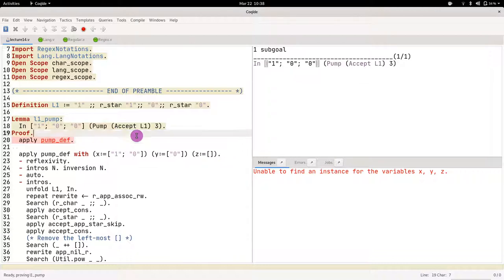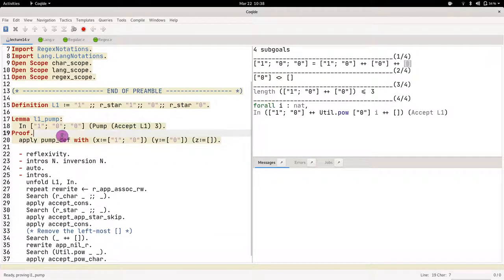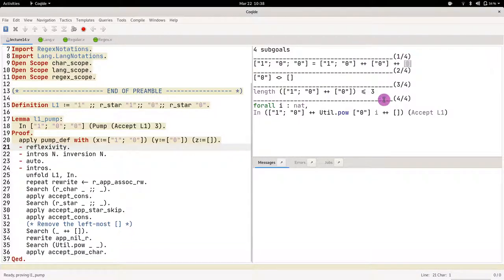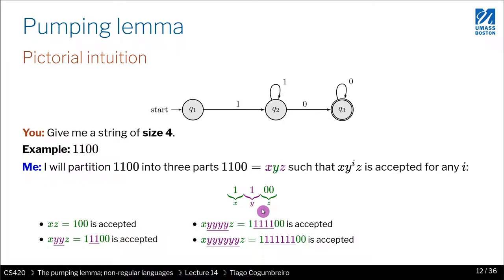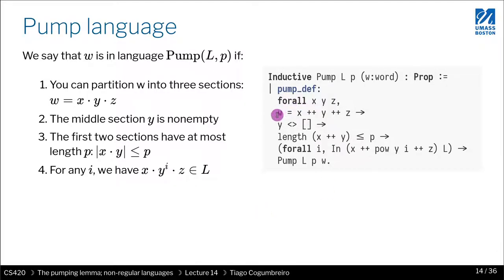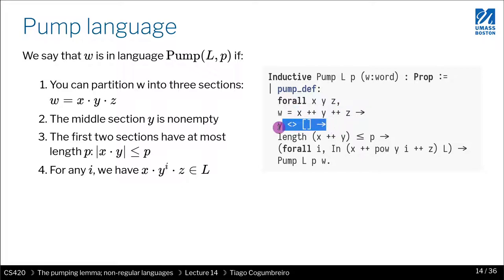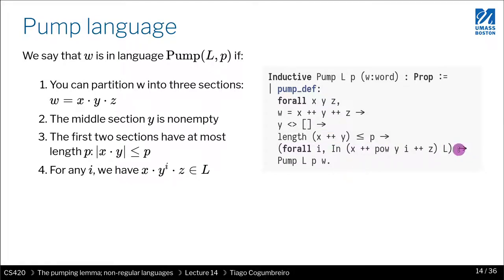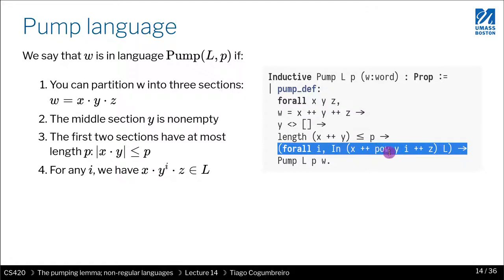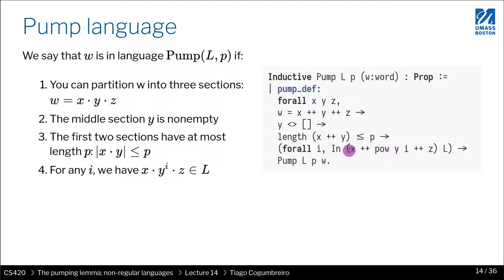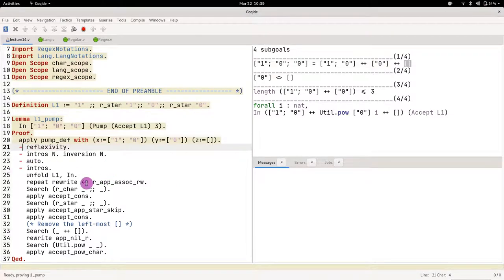We give x to be 1 0, y to be 0, and z to be the empty string. Now we see we have four goals to prove. First, we need to show that the string can in fact be divided into those three parts — usually a trivial part. Second, we need to show that the middle part is not empty. Third, we need to show that the first two parts are at most of length three. Finally — the difficult and interesting part — we need to show that we can pump y as many times as we want and the pumped string will still be in L.